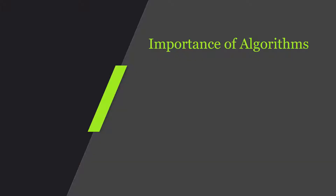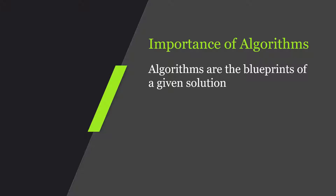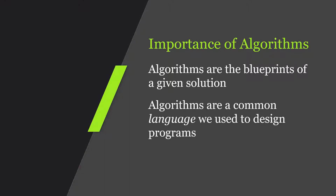Now that we understand what an algorithm is, the question becomes why. Why do we want to take the time to generate these blueprints or this algorithm? Why not just go about implementing right away? Well, one key thing is it is a common language that all computer scientists know how to speak, and it's what we use to design programs. From this common language, we can understand the complexity of the algorithm, how efficient it is, or maybe some of the gaps we need to address. But more importantly, especially for a beginning student, the algorithm is written in your common tongue or natural language.